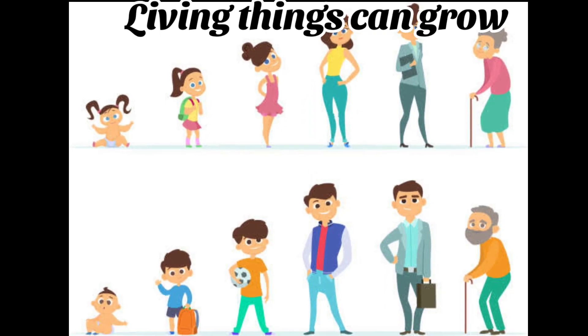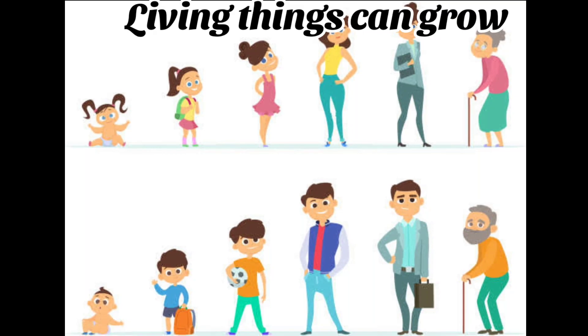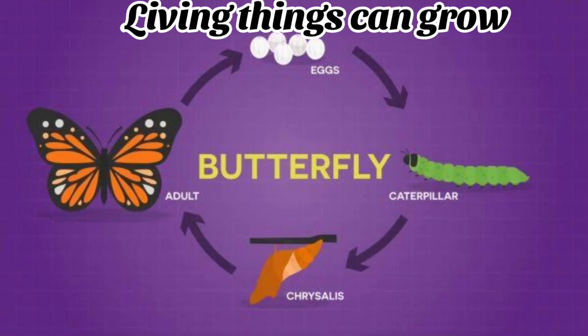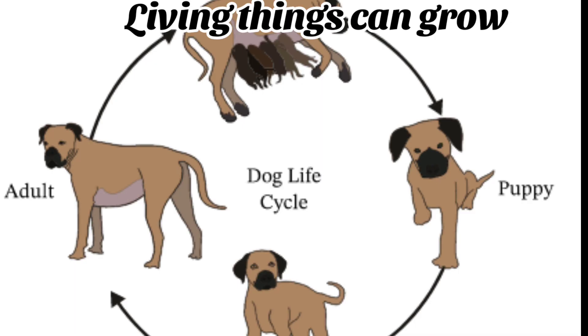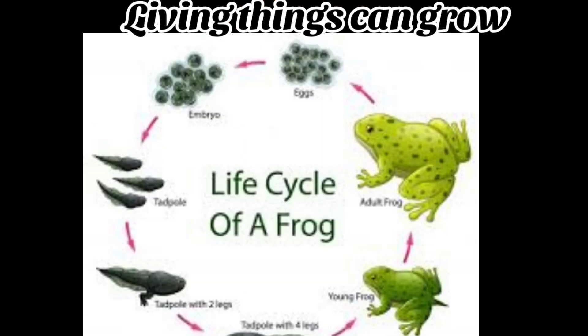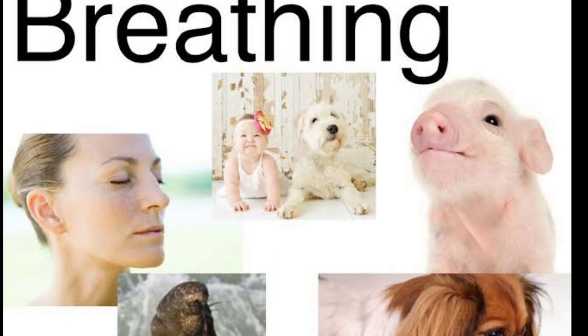All living things grow — from a little baby to an old woman, and from eggs to a butterfly, and from a little puppy to an adult dog, and from eggs to a frog.